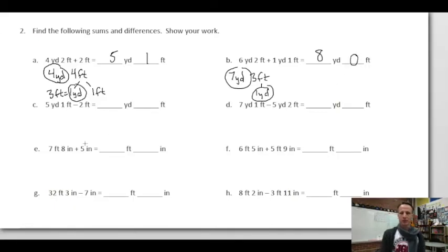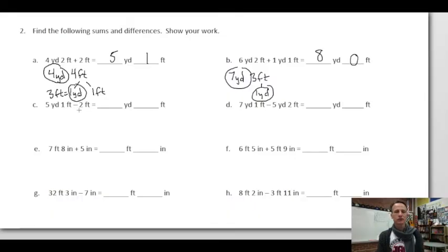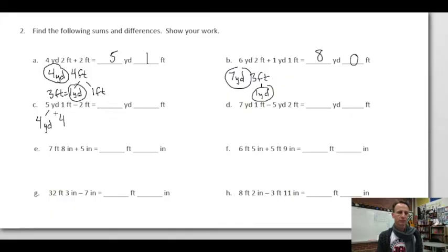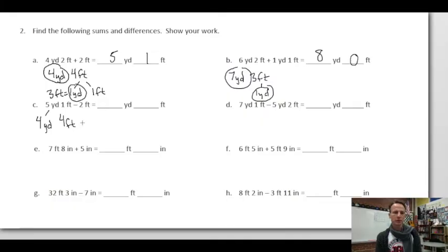Eight yards and zero feet — so we'll write that, though it looks a bit odd. Next: five yards one foot minus two feet. We leave four yards alone. One of those yards we decompose as three feet, combined with the one foot already present, giving four feet. Four feet minus two feet leaves two feet. Answer: four yards two feet.